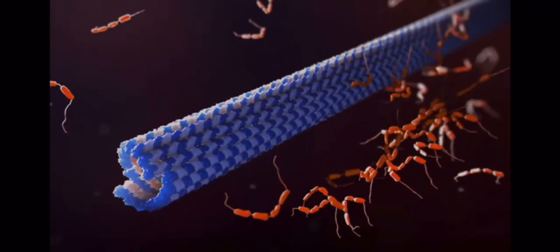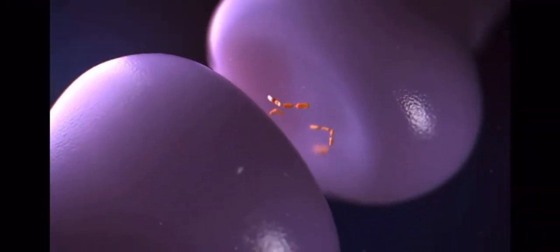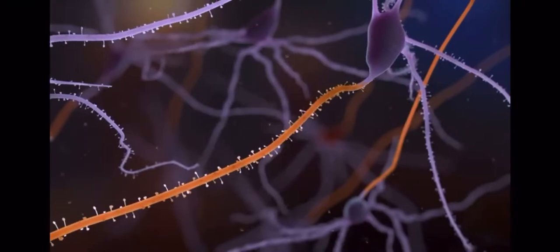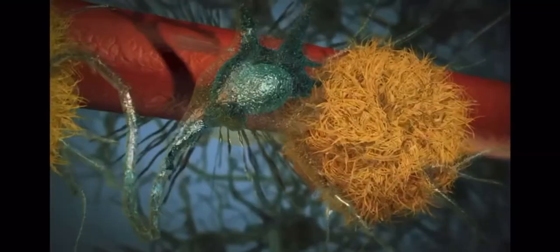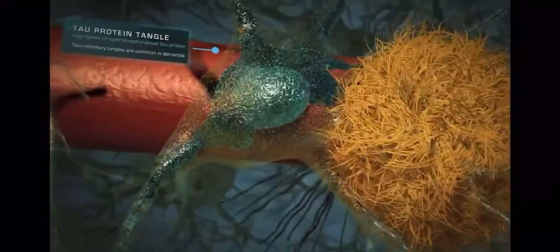Tau proteins entangle, becoming insoluble neurofibrillary clusters, weakening plasticity and connectivity. Tau proteins cluster with toxic plaque causing cell death.